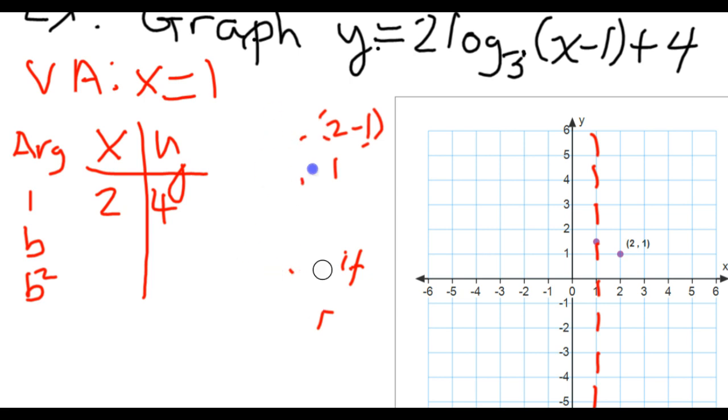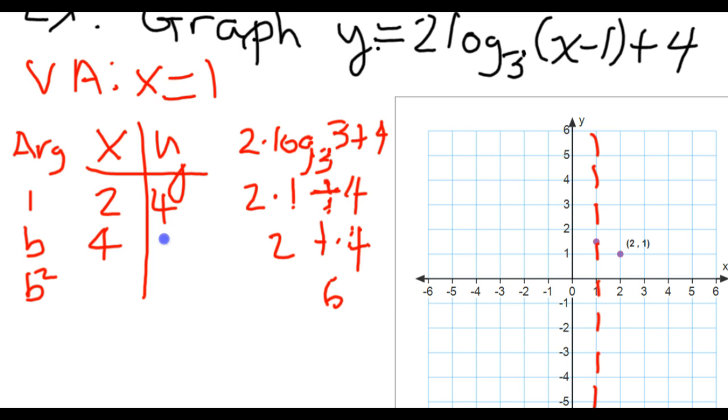Now, the next point I want to graph will be where my argument matches my base. Well, since my base is a 3 this time, I need to pick a value for X that would make the argument 3. So in this case, I'm going to pick a 4. If I do that, I would get 2 times log base 3 of 4 minus 1 is 3 plus 4. That would be 2 times 1 plus 4. Does everyone see how I got the 1 there? Log base 3 of 3, this is a 1. Now, going forward from there, I would just be 2 plus 4 is 6. So when X is 4, Y is 6.